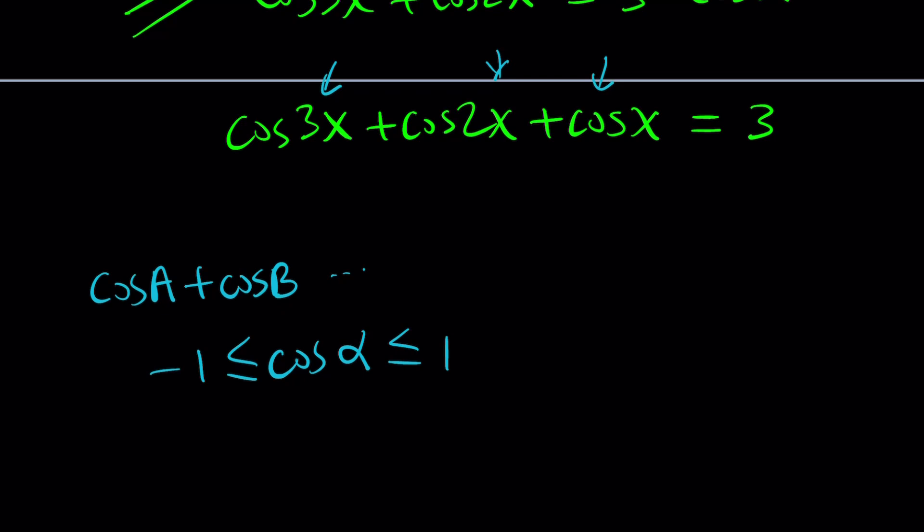But since cosine of any angle is less than or equal to 1, the maximum cosine can be is 1. So this can't exceed 1. Think about it, this can't exceed 1, this can't exceed 1, and this can't exceed 1. So their sum cannot exceed 3, but their sum is 3. So each of these must be 1. Make sense? So we kind of got the same thing, cosine x equals 1, like the first method.